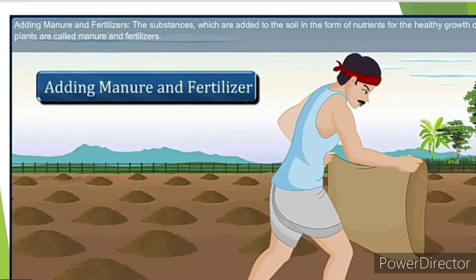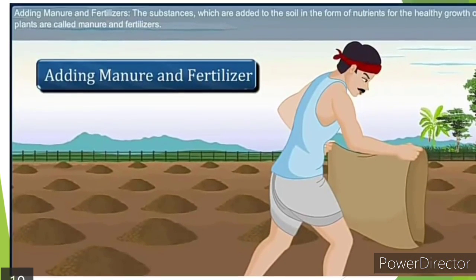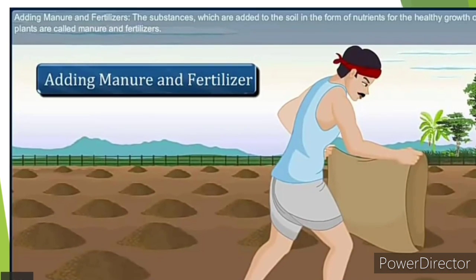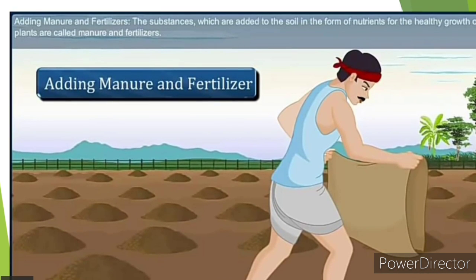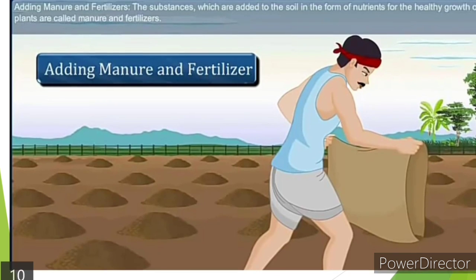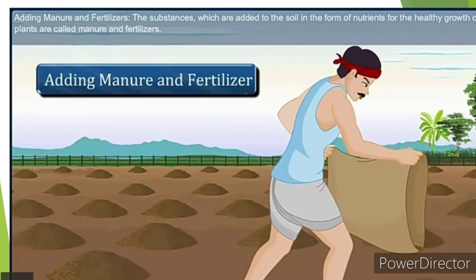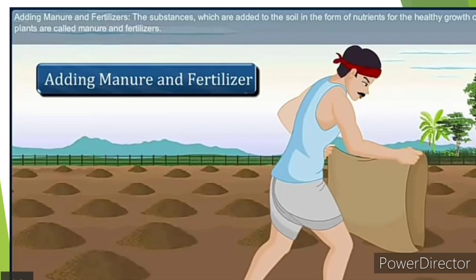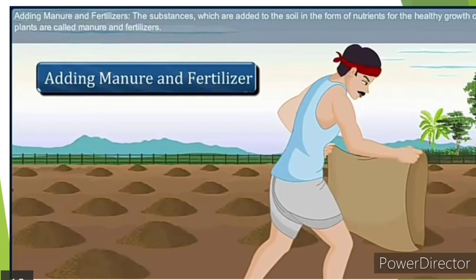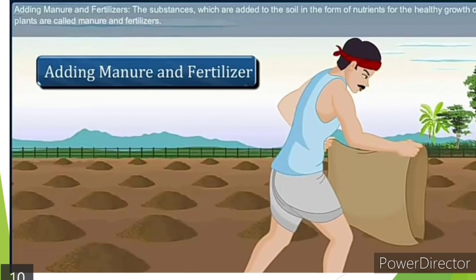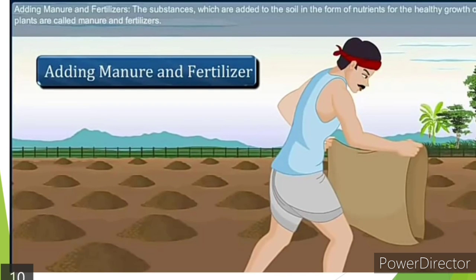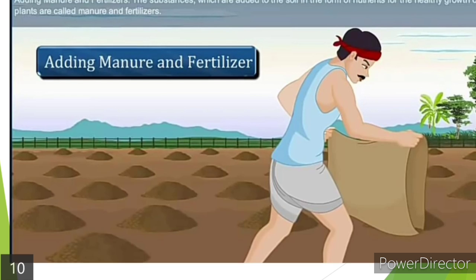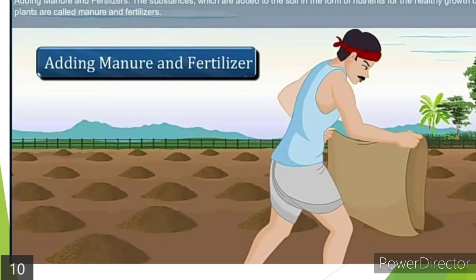Next, we will discuss the adding of manures and fertilizers. Manures and fertilizers are substances which are added to the soil in the form of nutrients for the healthy growth of plants. They are called manures and fertilizers, but there are some differences between them.